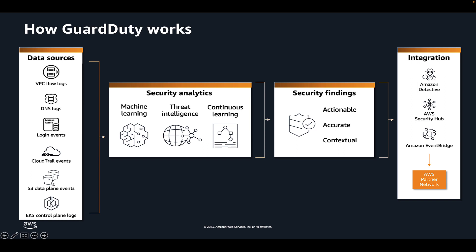It also processes features such as Kubernetes audit logs, RDS login activity, S3 logs, EBS volumes, runtime monitoring, and Lambda network activity logs. It uses threat intelligence feeds such as malicious IP addresses and domains, and machine learning to identify unexpected, potentially unauthorized, and malicious activity within your AWS environment.